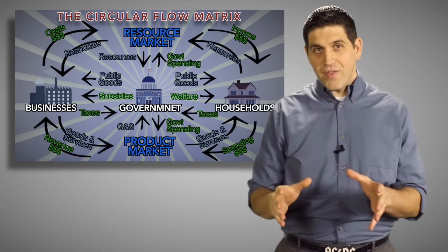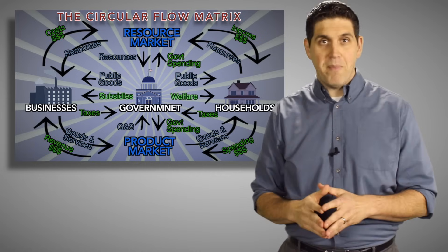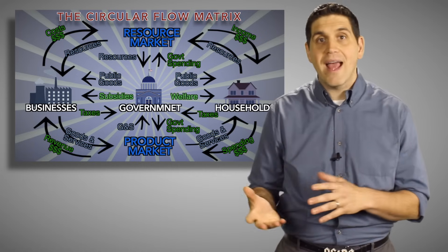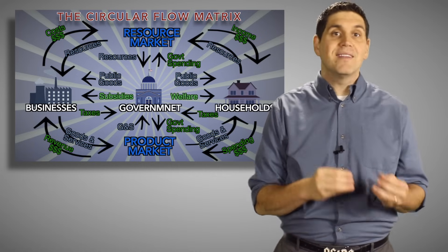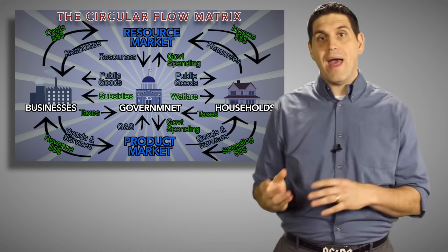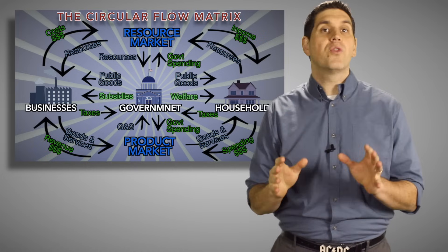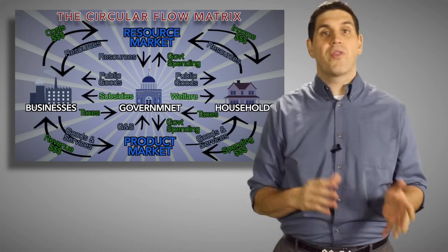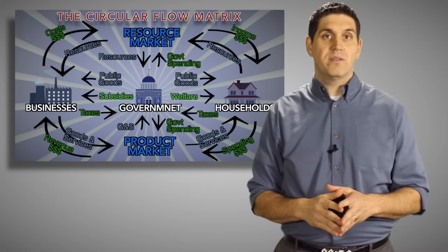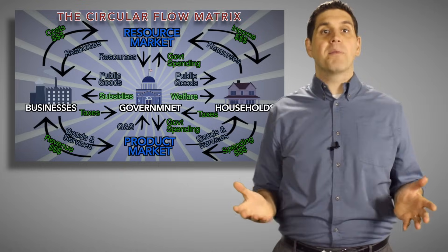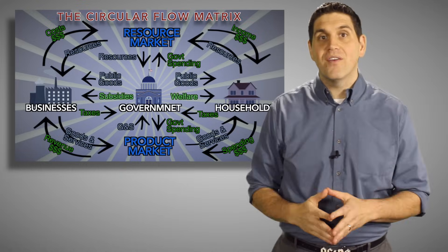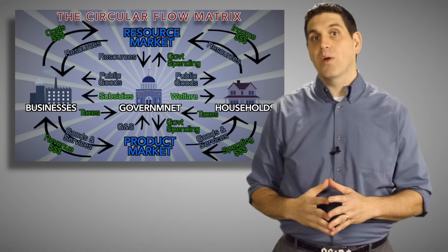Now there are several things still missing from this matrix, including a financial sector where money isn't spent — it's saved and then loaned out — and also the role of other countries with exports and imports. But for now, this diagram gives you a pretty good idea of how a modern economy works.